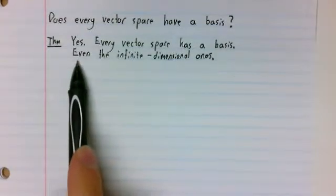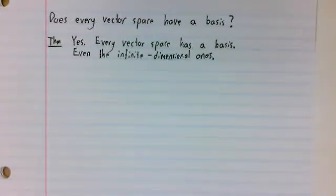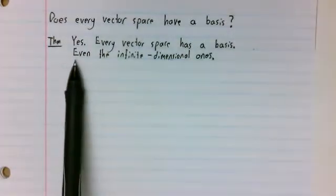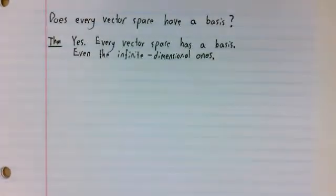The second statement is a lot less trivial. For the second statement, we'd have to expand our definitions. Our current definition of linear independence only really works if we have a finite number of vectors. But that's easily done. That's not what gave people trouble.